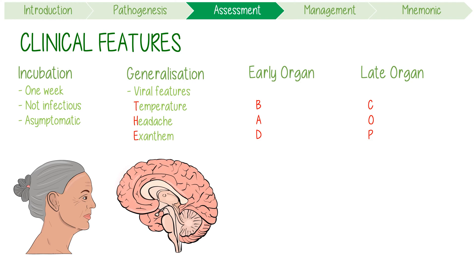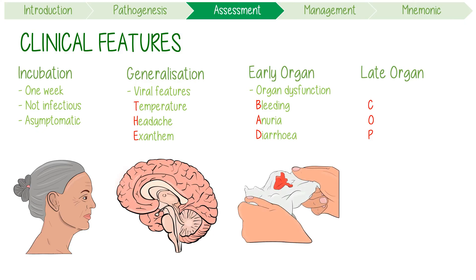Phase 2 represents the initial manifestations of organ dysfunction. Think bleeding, anuria, and diarrhoea. This highlights its haematological signs, like mucosal bleeding.